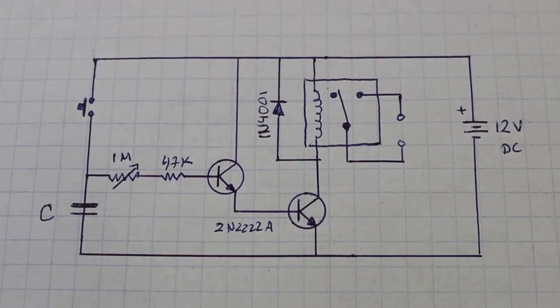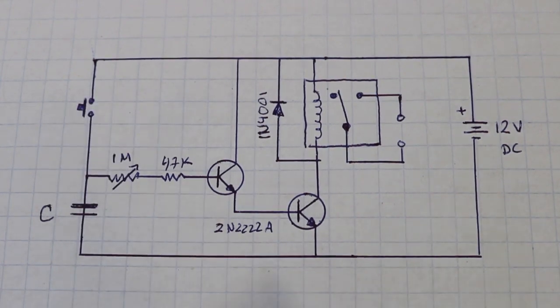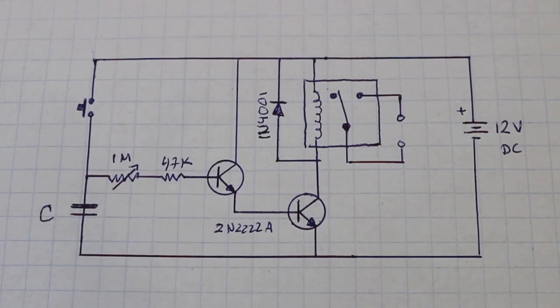Okay, here we have the diagram of the circuit and let me explain how it works. When we press the push button, the current can flow from the battery and charge this capacitor.